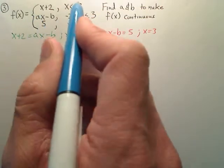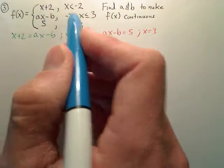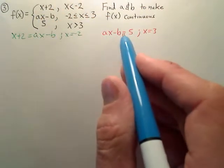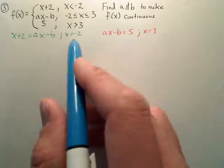So these two meet at 3, these two meet at negative 2, so you have to set the equations equal so they connect at those x values.